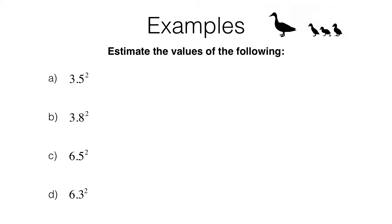In the first example we need to estimate the value of 3.5 squared. We're only estimating so we don't want to work out the exact value. I'm going to spot that 3.5 is in between 3 and 4, and look at what 3 squared and 4 squared are. 3 squared is 3 times 3, which is 9, and 4 squared is 4 times 4, which is 16.